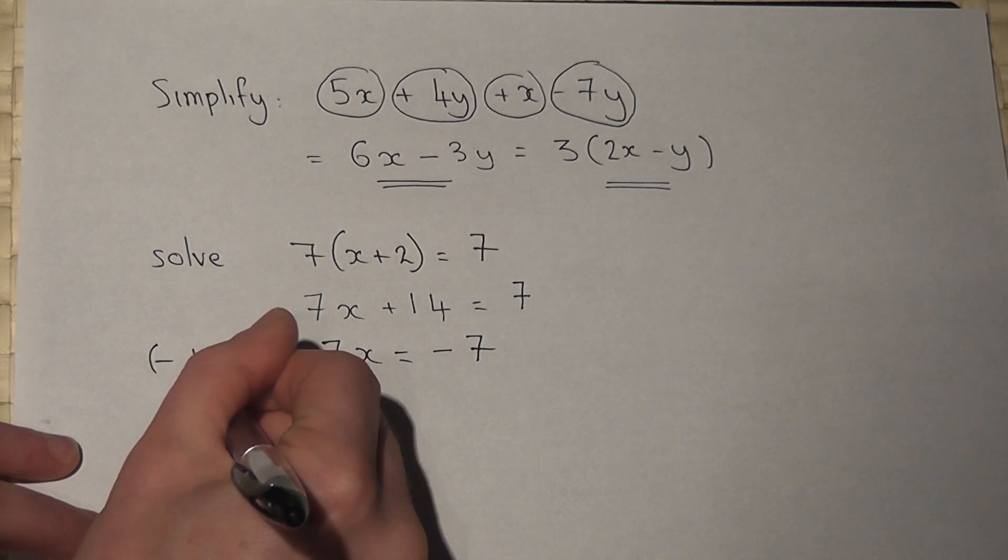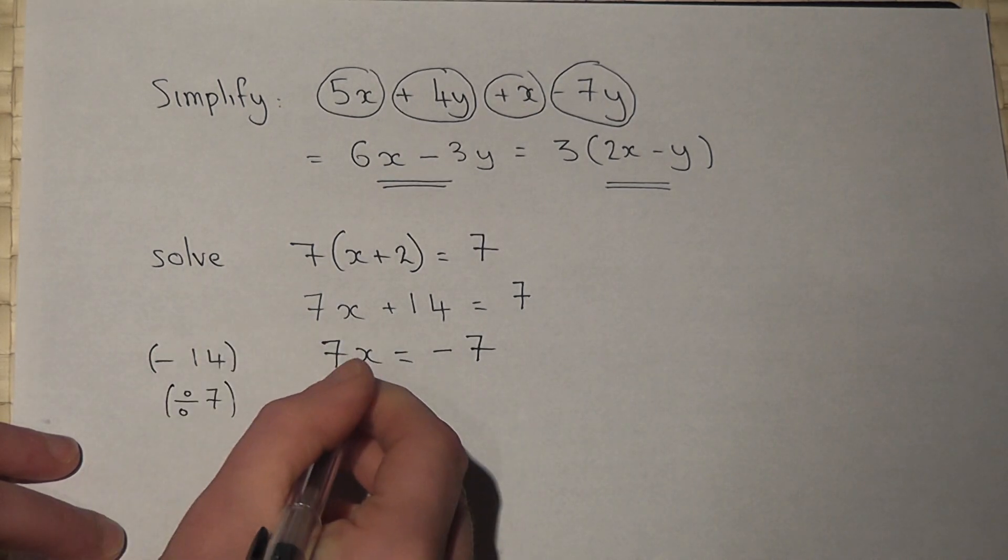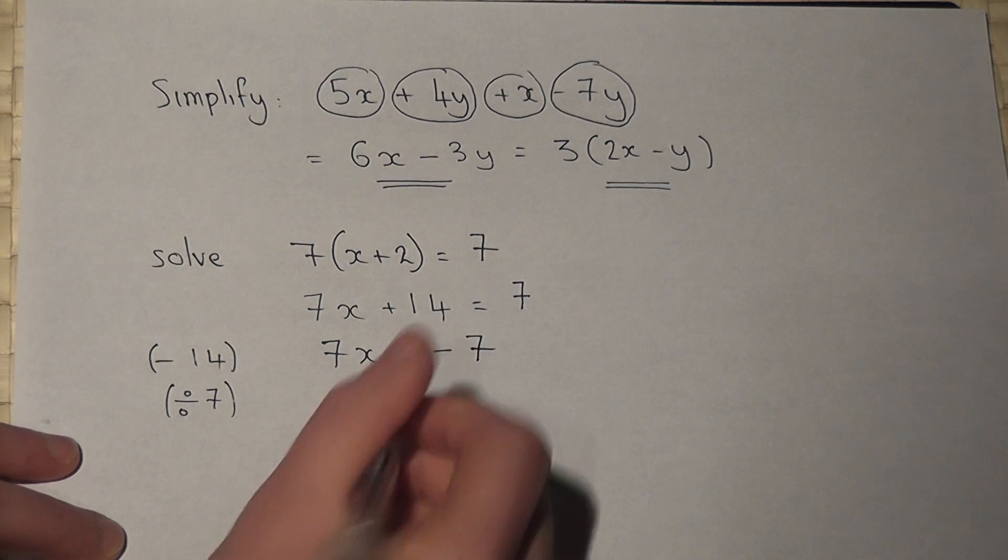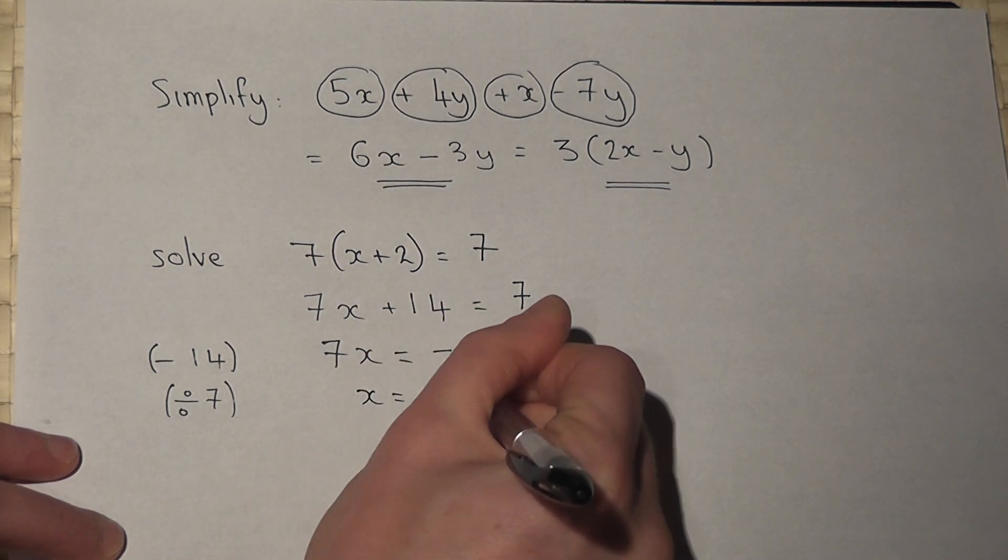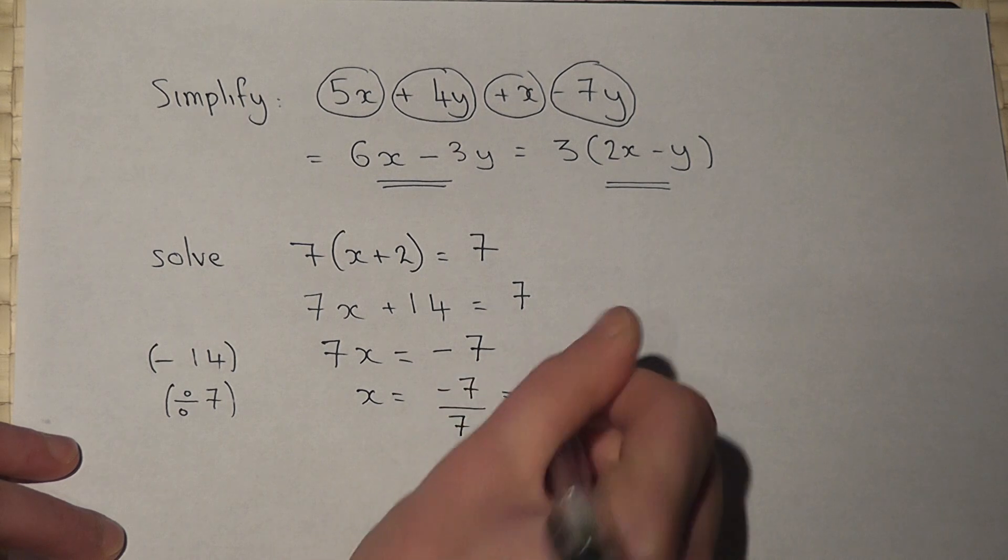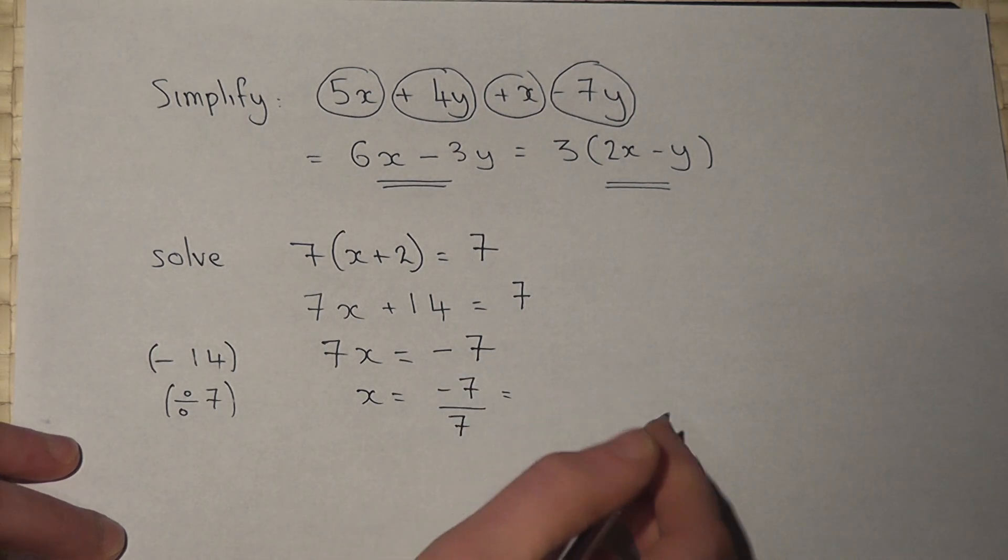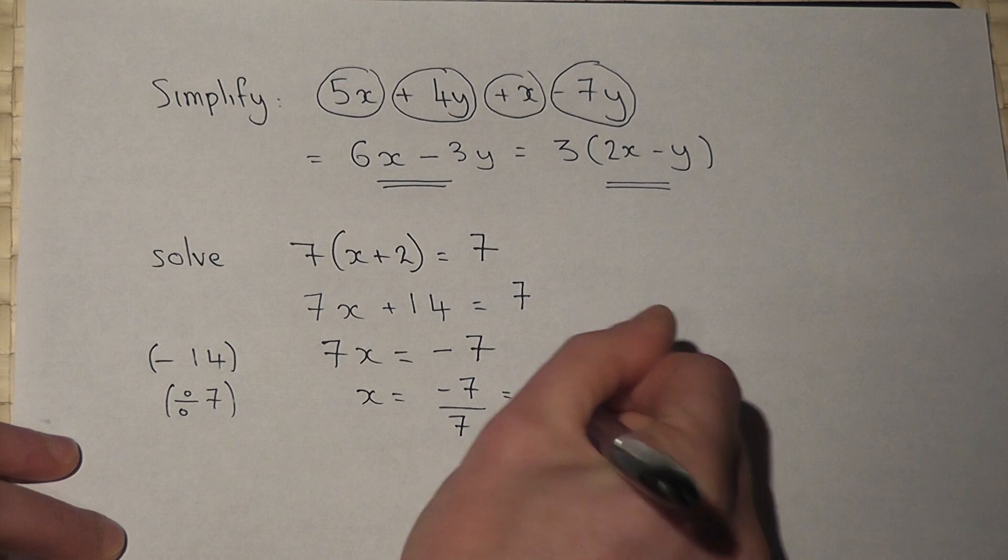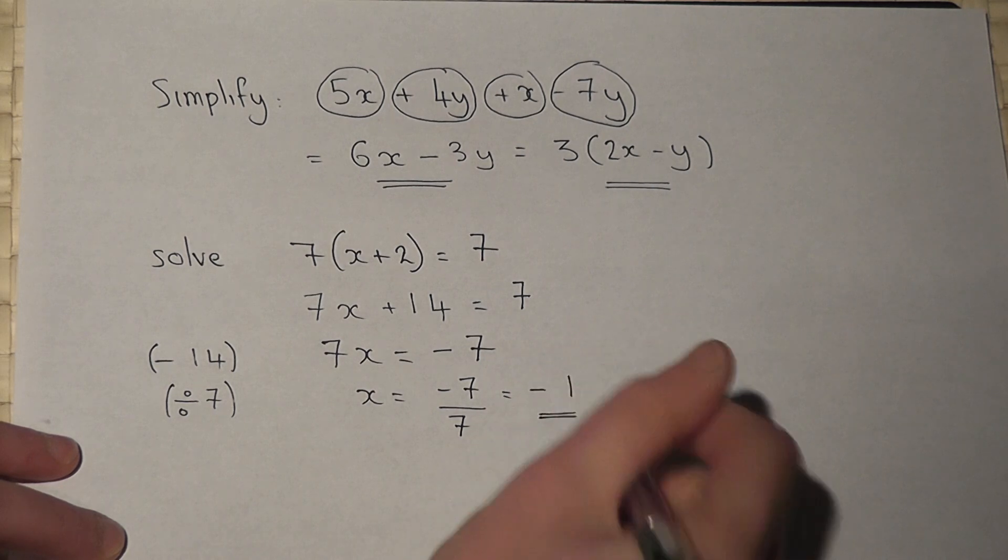If I now divide by my 7, which is the coefficient of x, then x equals negative 7 divided by 7. Now 7 divided by 7 is 1. It's negative, so the answer is negative 1.